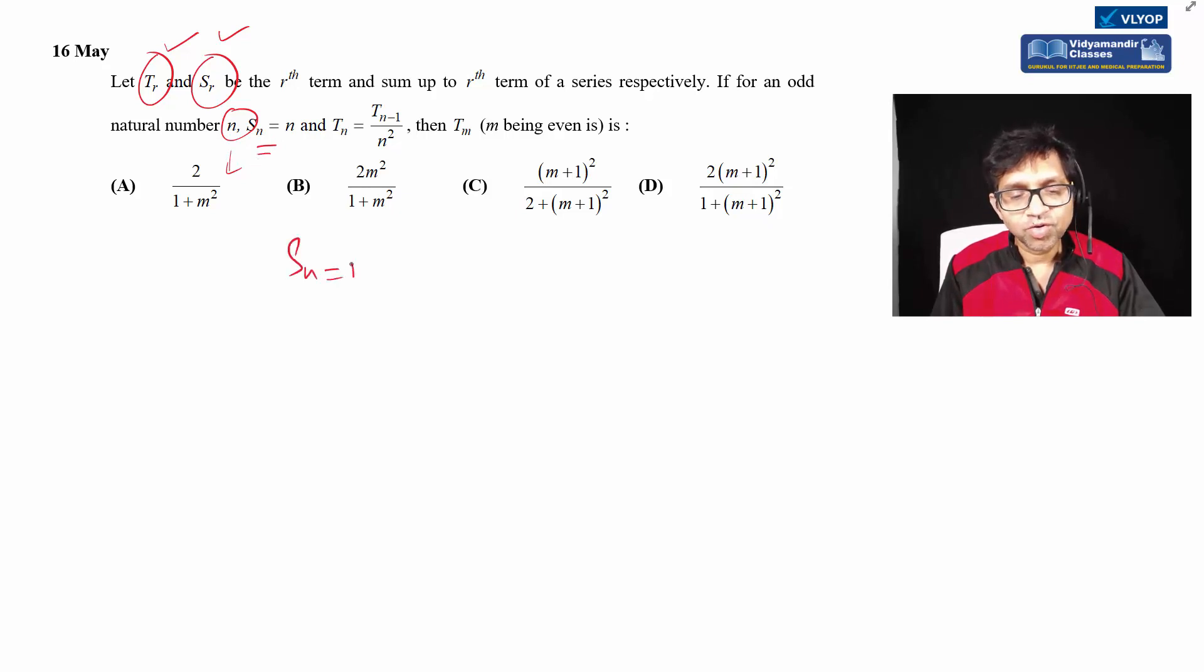The sum in a series sn equals n where n is odd, this is given. Also we have tn equals tn minus one divided by n squared. tn's relationship in terms of tn minus one is given, and we have to find tm. It's an interesting question - we have odd given and tn in terms of tn minus one is given. I would say this is an average level question.